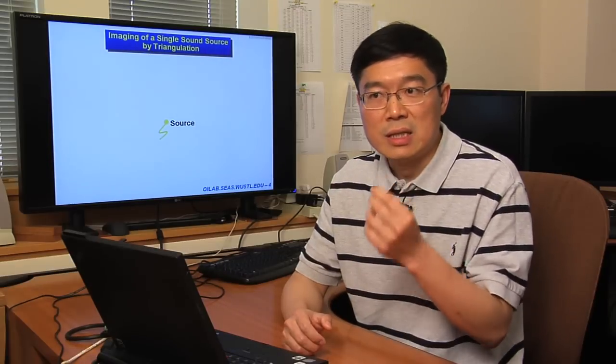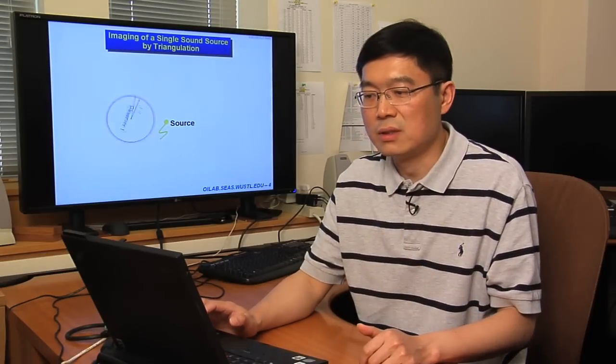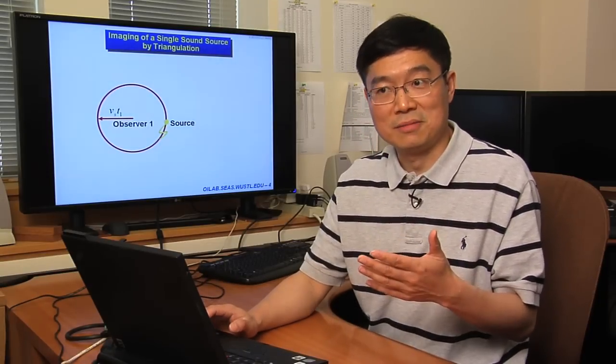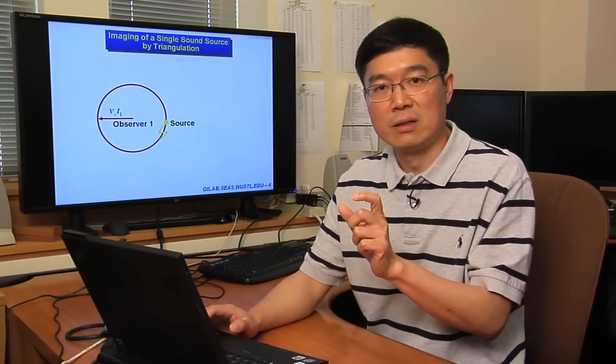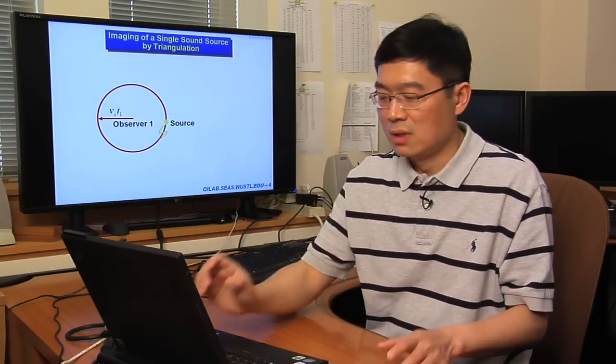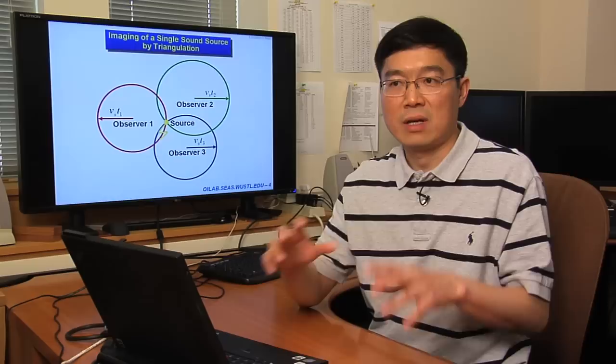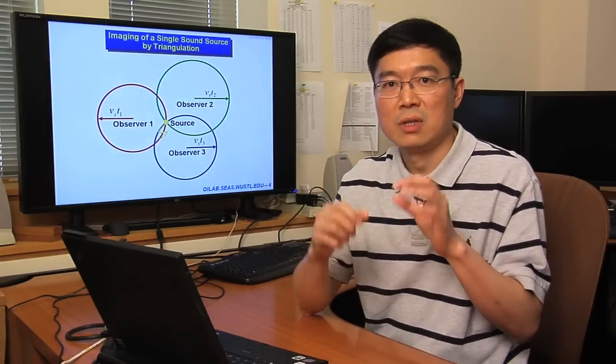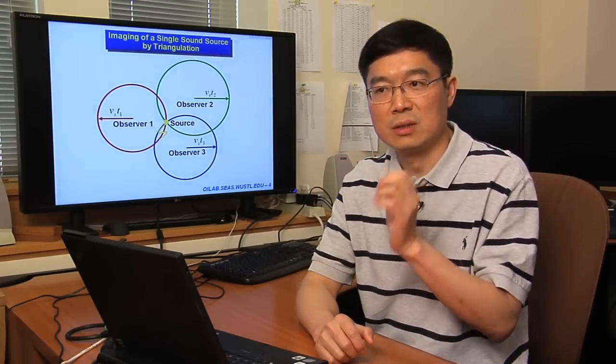Imagine there's a thunderbolt. When you see the lightning, you can reset your stopwatch. When you hear the thunder, you can record a time delay. Multiply the time delay by the speed of sound in air, you can define a radius for a spherical shell on which lightning took place. If you have three such concurrent measurements, you have three such spherical shells. The intersection of the spherical shells will pinpoint the thunderbolt.